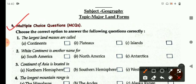The first question is the largest land masses are called and you have options continents, plateaus and islands. The right answer is continent.